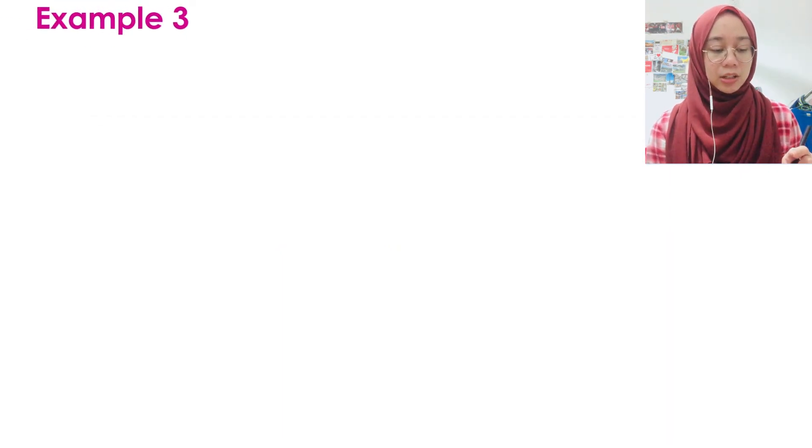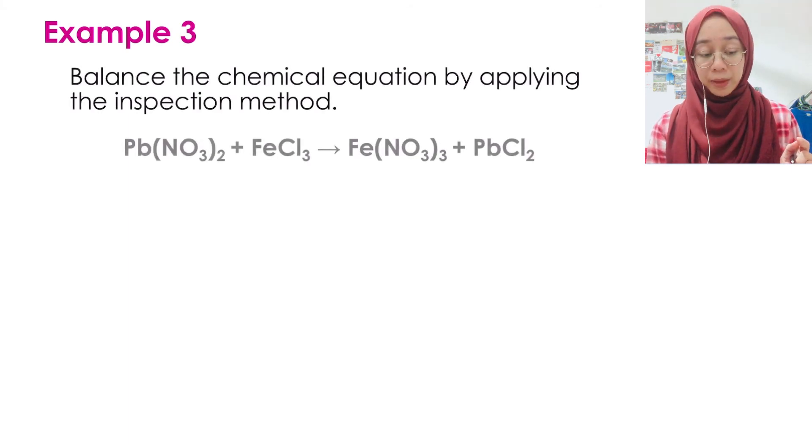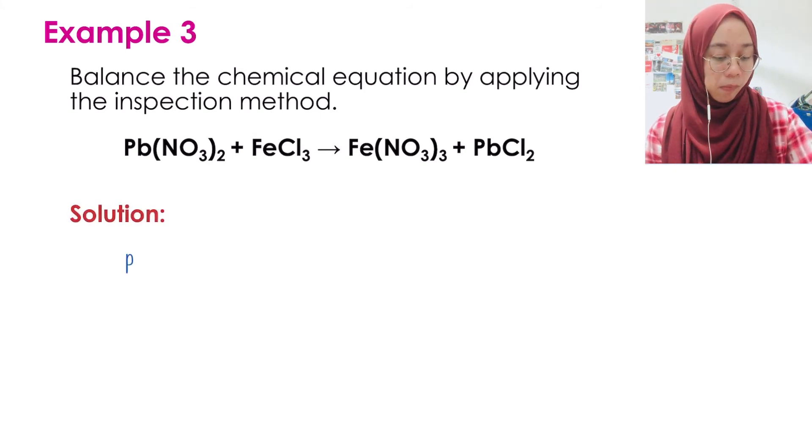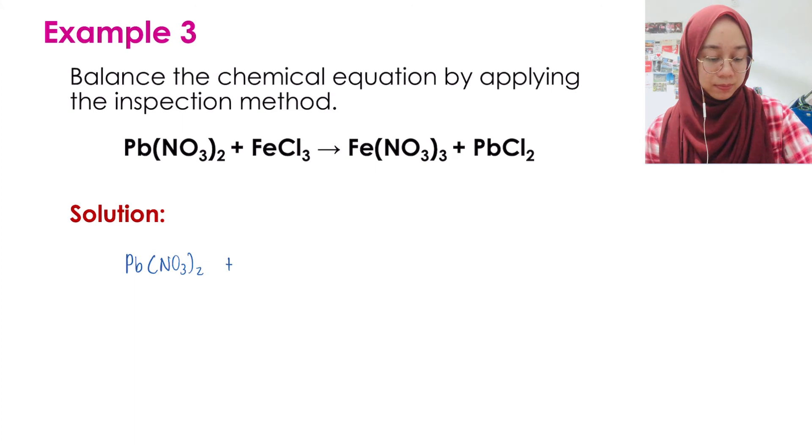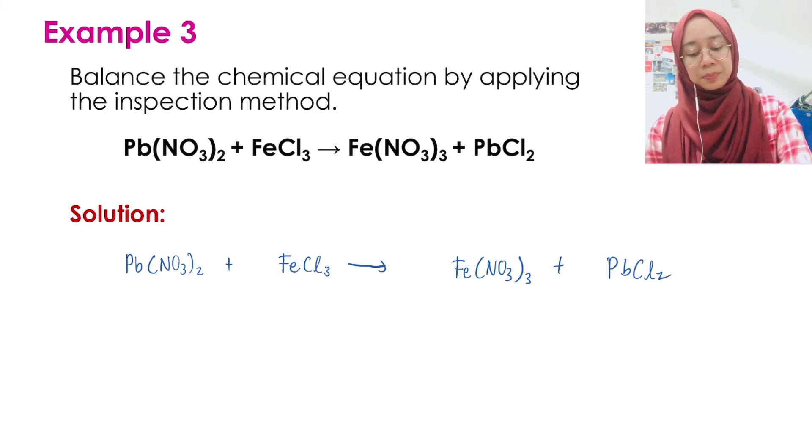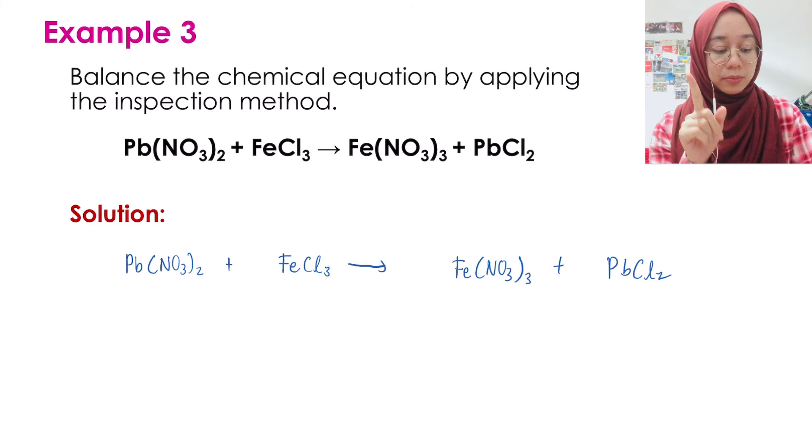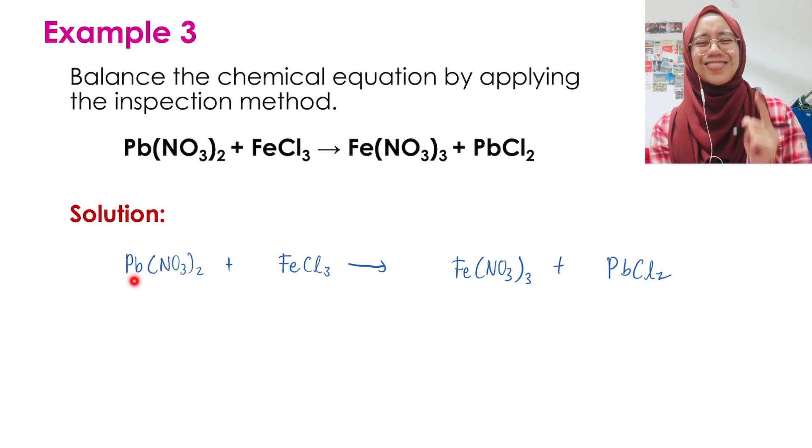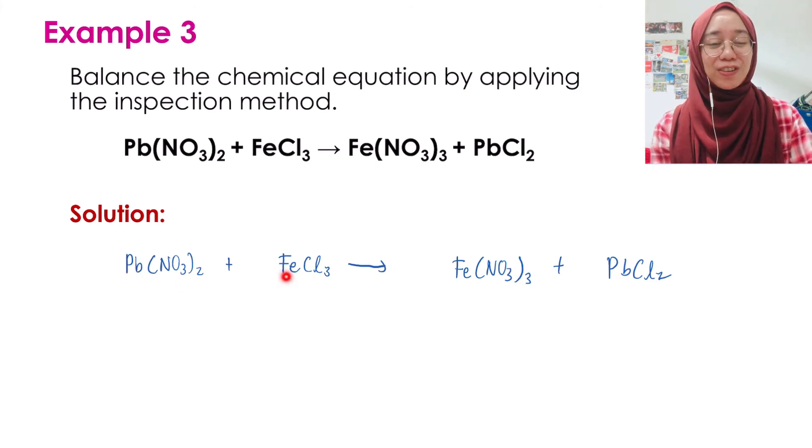Example three. Example three is the one with ions. So write it back. Start with the first step which is metal. We have many metals here. We have lead and we also have iron. Whichever one you want to balance first. Lead here is one. This one is also one on the right. Iron we have one. On the right side also one. So metal is balanced already. We don't need to disturb it.